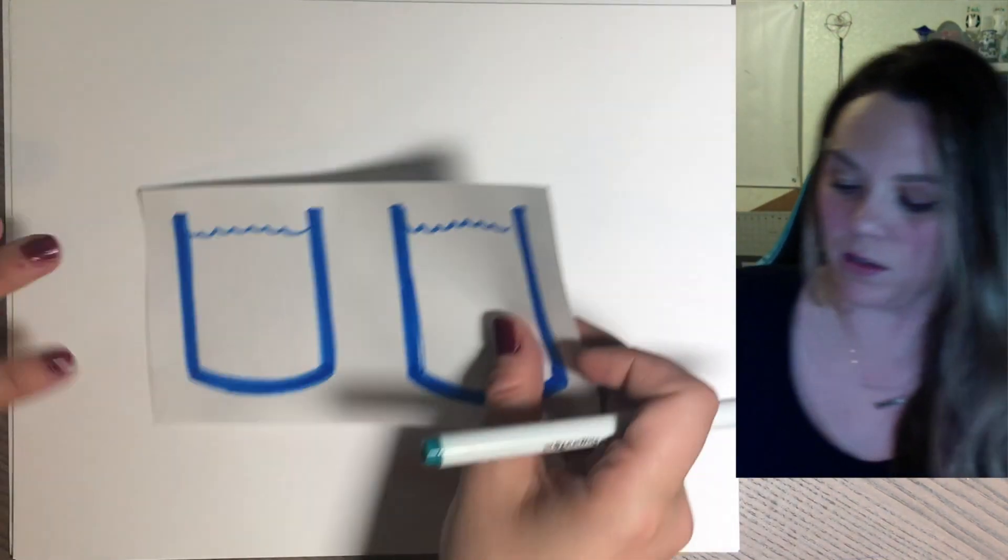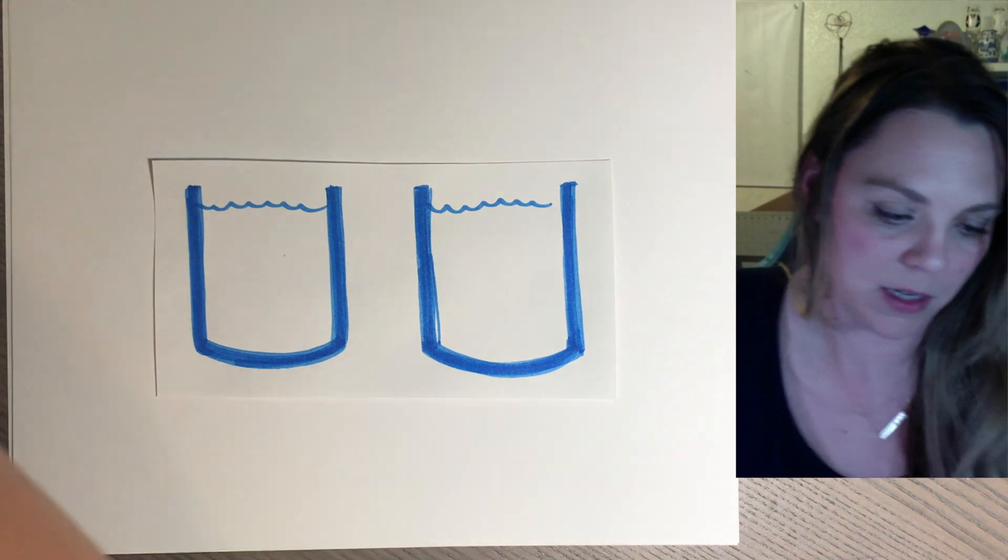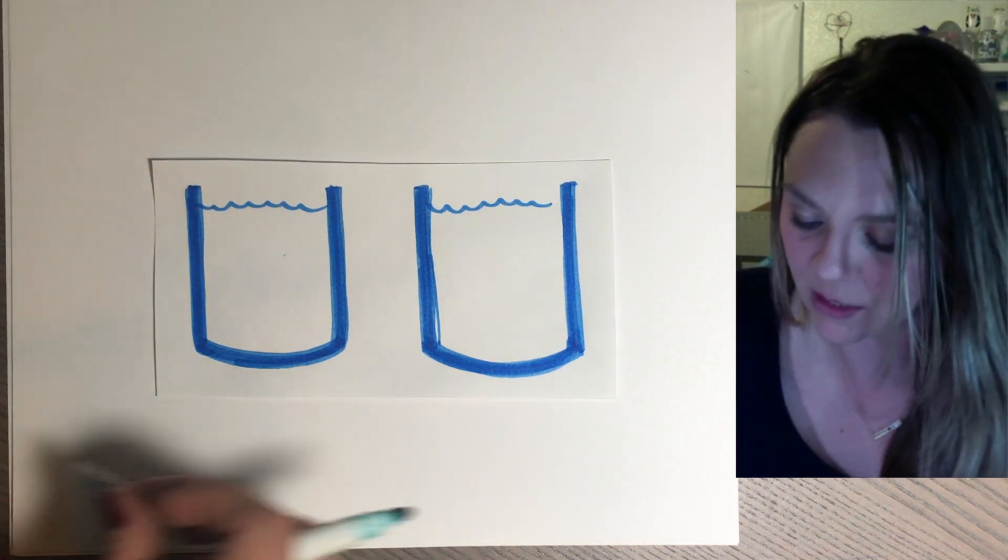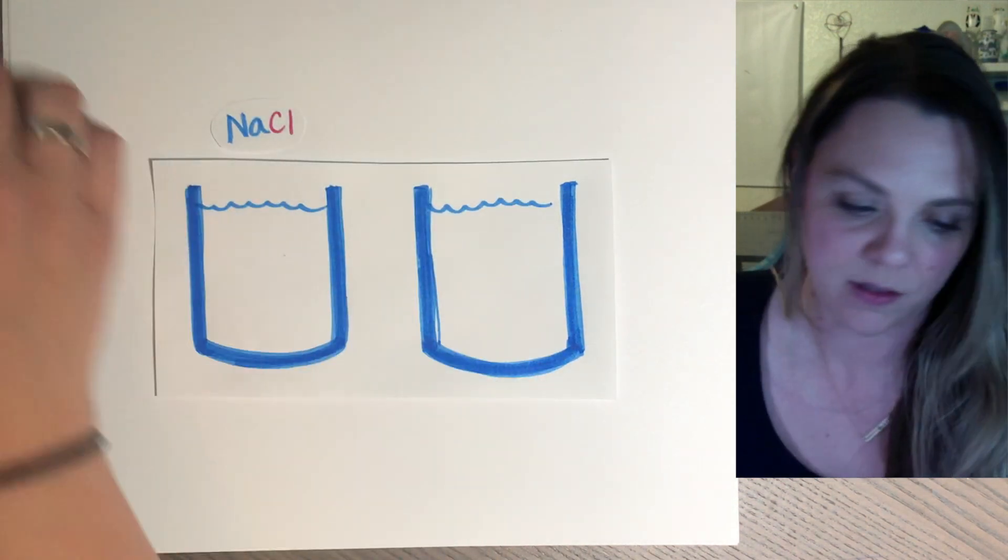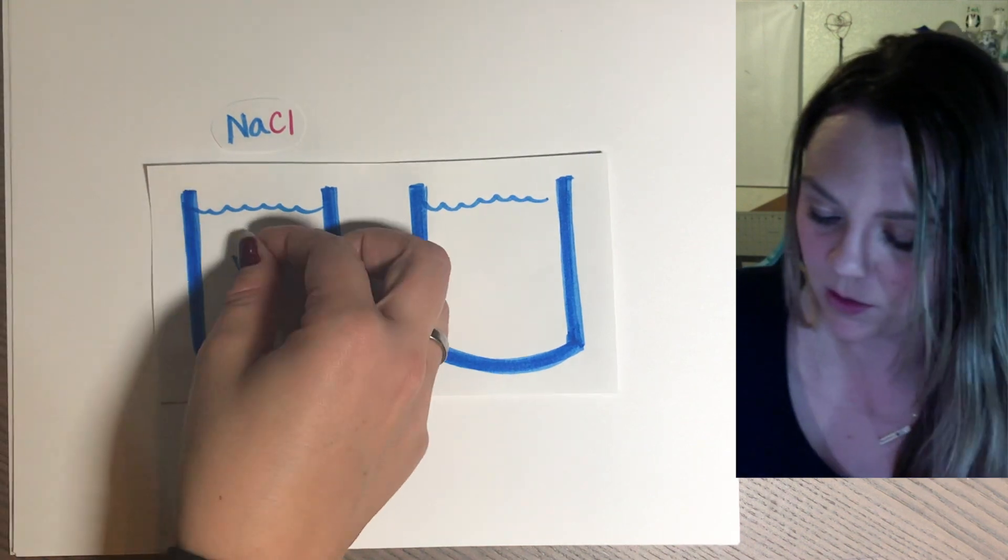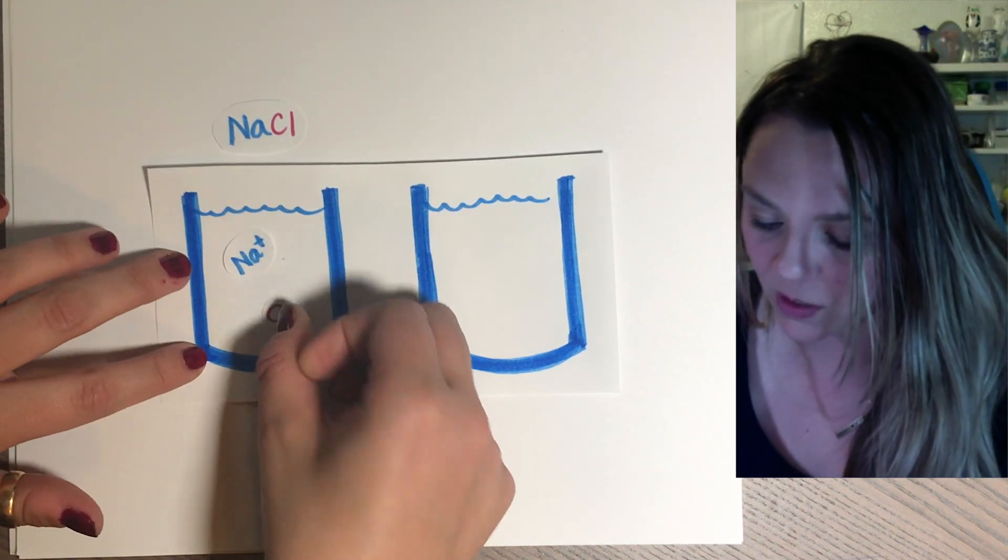Let's quickly look at how this stuff breaks down. So if, again, if you have something easy like NaCl, you get one sodium for one chlorine.